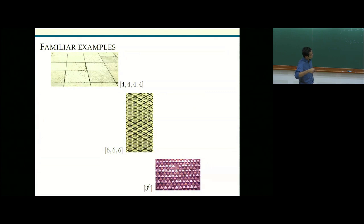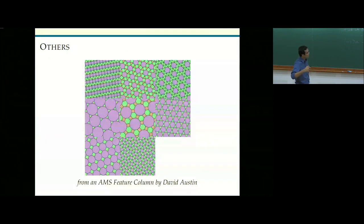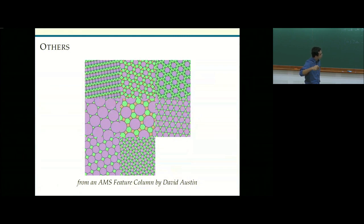These three tilings use only one type of polygon. If you allow different polygons, what are the possible tilings of the plane? There are exactly eight more, called the Archimedean tilings — for example, with squares and equilateral triangles, or a hexagon, square, and triangle. All eight are uniform. These eight plus the previous three, all called Archimedean tilings, have a very long history, known for probably thousands of years.